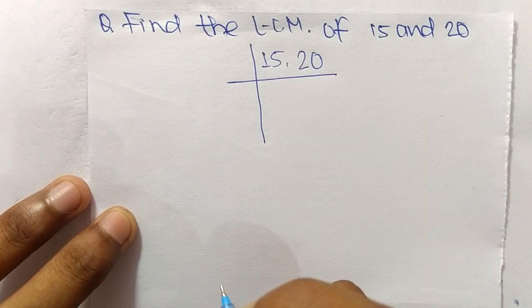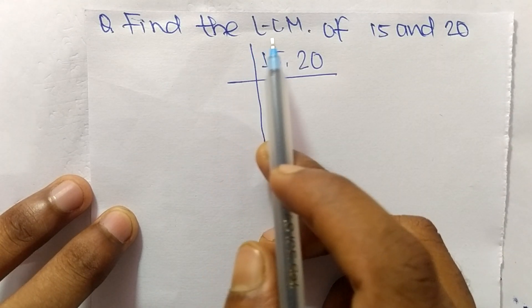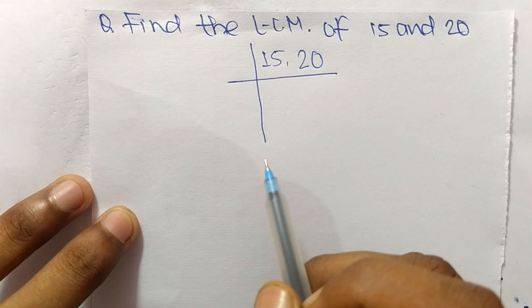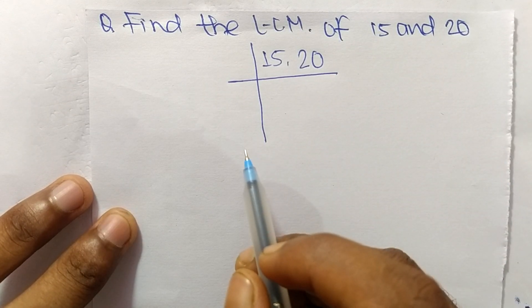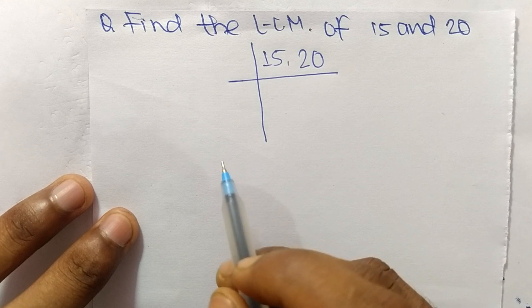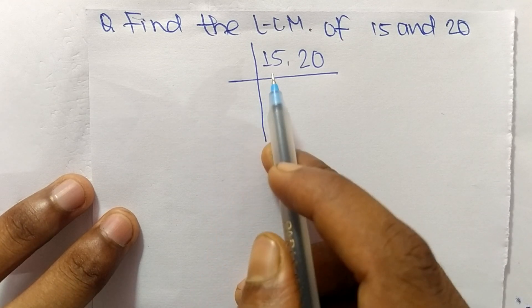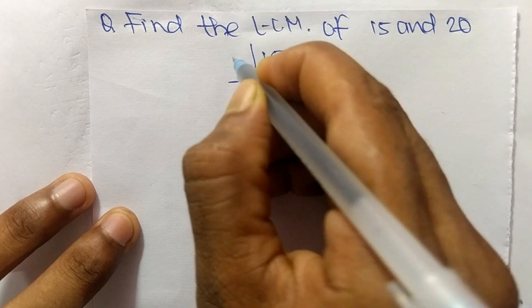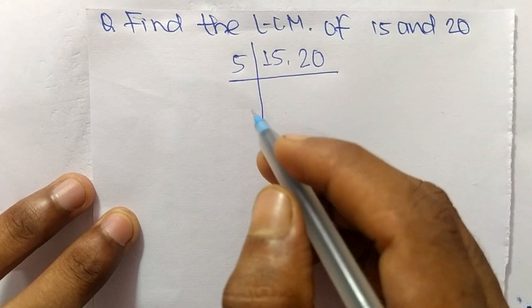So today in this video we shall learn to find the LCM of 15 and 20. To find LCM, first we choose the lowest number that can exactly divide 15 and 20, so we take here 5.